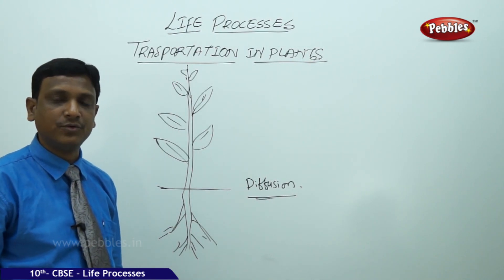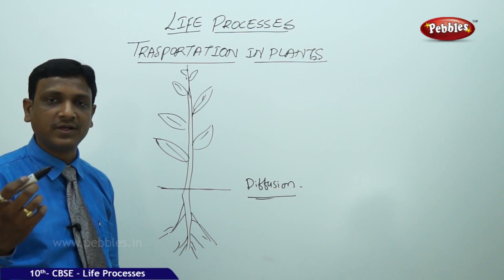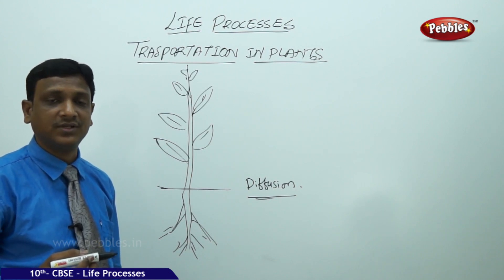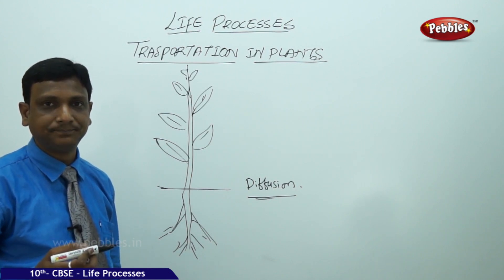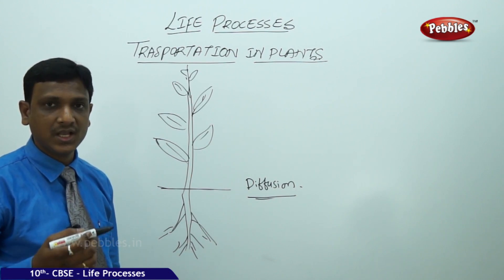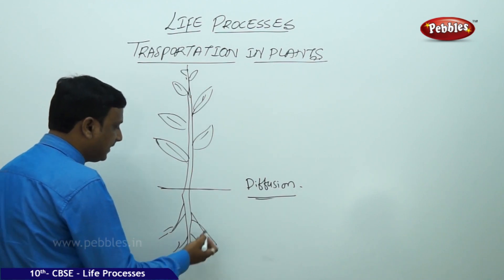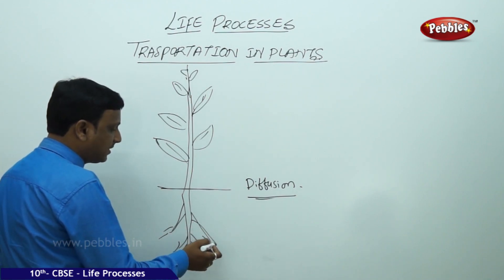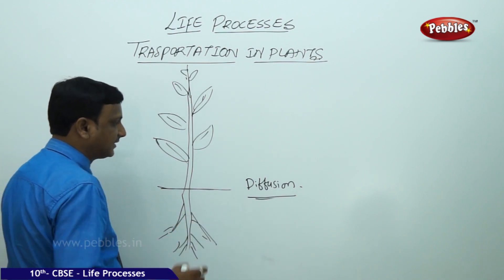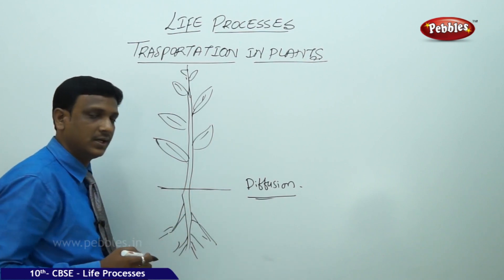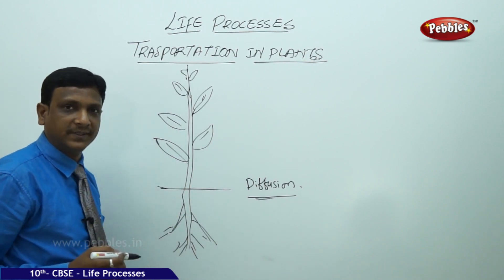Certain trees grow very tall — more than 20, 30, 40, 50 feet of height. So here it may not be possible by simple methods like diffusion or osmosis to transport the materials.